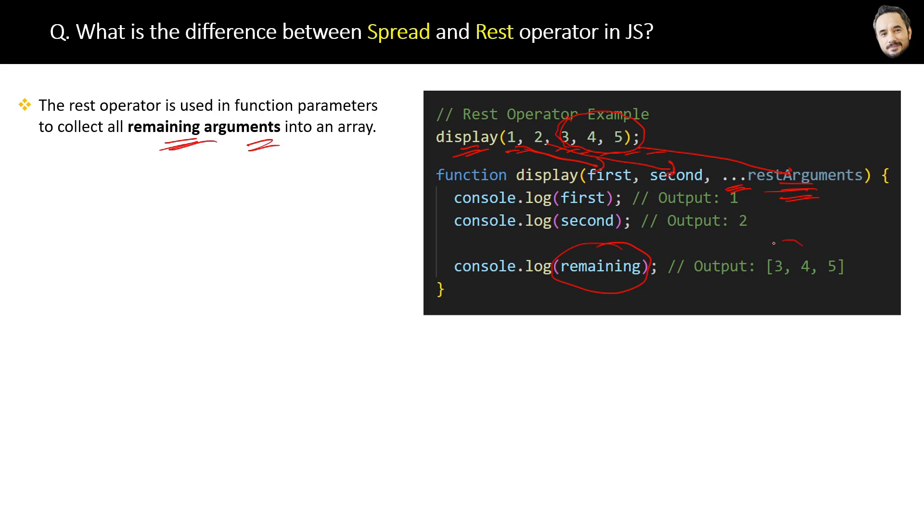So that's the whole story. I think now the difference is very much clear to you. One is to spread the array into individual elements, and the other rest is to represent the rest of the elements.